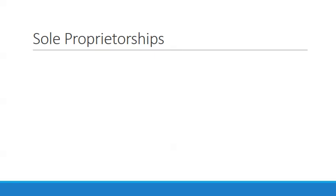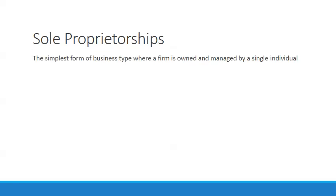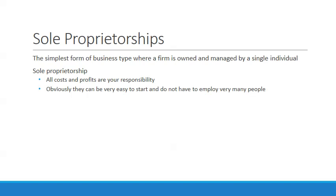The first we want to look at is a sole proprietorship — the simplest form of business type where a firm is owned and managed by a single individual. All costs and profits are your responsibility. Even though you're making all the money, you're also footing all of the costs. They can be very easy to start and do not have to employ very many people. The majority of businesses in a city are sole proprietorships.